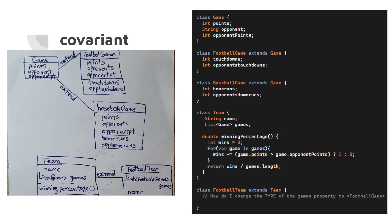Let's understand covariant with an example. We have several classes with the following relations: a Game class has points, opponent, and opponent points. We want to create a FootballGame that extends Game, and a BaseballGame that also extends Game. These subclasses take the variables inside Game and define their own variables.